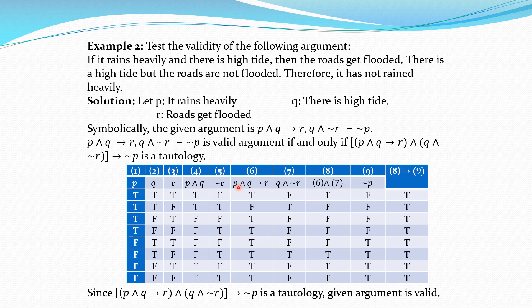But many times an argument contains four or five variables. If the argument contains four variables there will be 2⁴ = 16 rows; if it contains five variables, 2⁵ = 32 rows. So it is very difficult and time-consuming to prepare that table, and there may be mistakes. So even though this method is easy, it is not practically applicable if there are more than three variables. Instead, there are two other methods: one is the direct method and another is the indirect method.